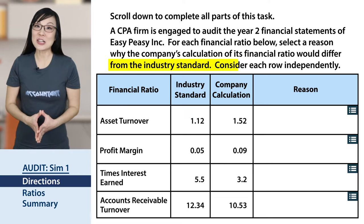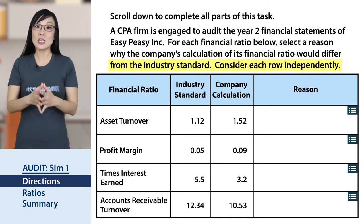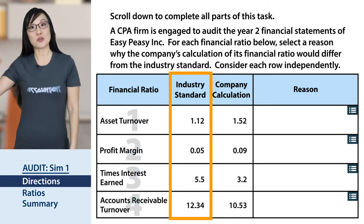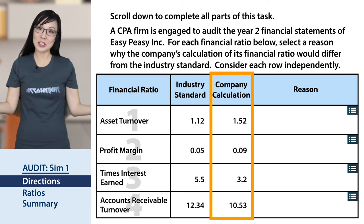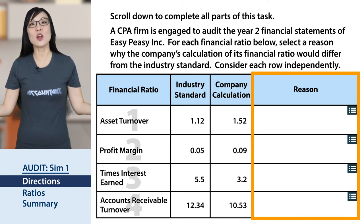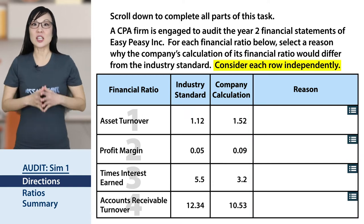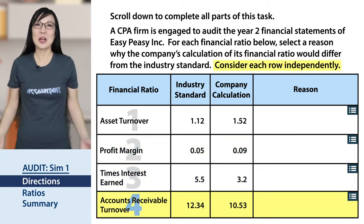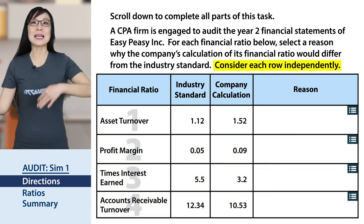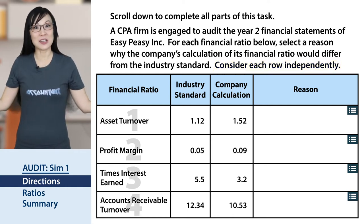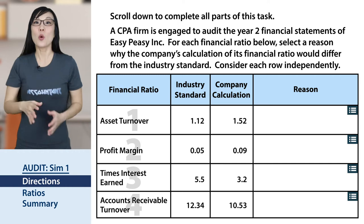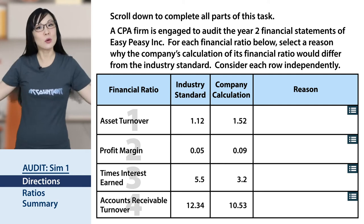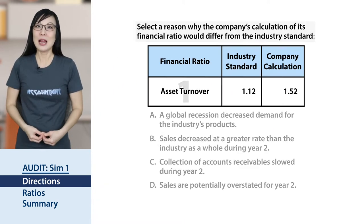Consider each row independently. In this problem we have four ratios. They give us the industry standard and the company's calculation, and we need to find a reason why there's a difference. Consider each row separately — meaning don't use the information in one ratio to analyze another. That makes it easier. Even though there are four ratios, we can solve each one as a separate problem.